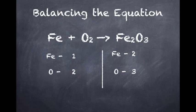In the product, there are two atoms of iron and three atoms of oxygen. The next thing I did was I put a coefficient of 2 next to iron in order to balance it.